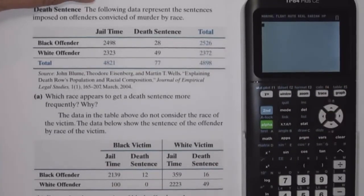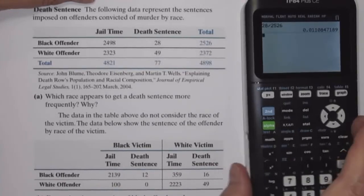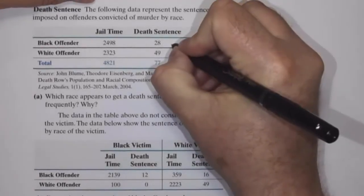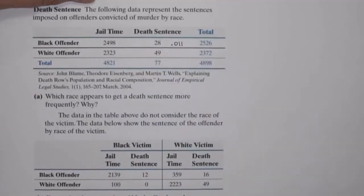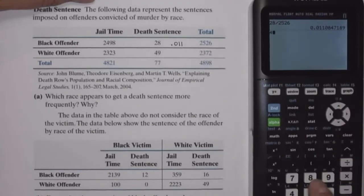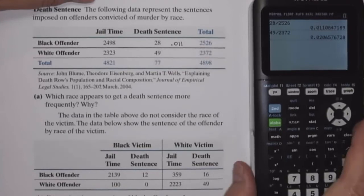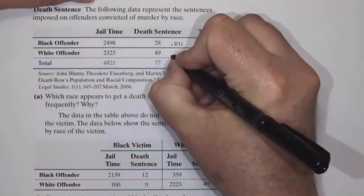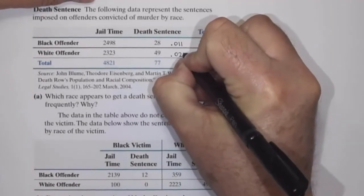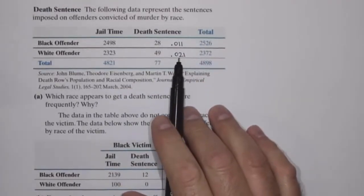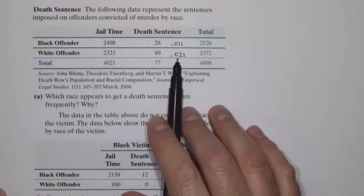So if we calculate the relative frequencies, that would be 28 divided by 2,526, which is 0.011. So about 1.1% of black offenders got the death penalty. And taking 49 divided by 2,372, that is 0.021. So about 2.1% of white offenders received the death penalty.